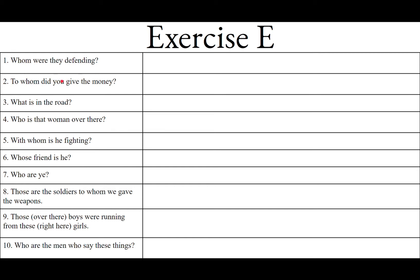It's going to be second-person singular, because you did it — perfect tense, active voice of do, dare, datus. What did you give? That's going to be the direct object. The money is what you gave, the thing that you gave — accusative case. We want the accusative singular of pecunia, first-declension feminine: pecuniam. Dedisti and pecuniam — you gave the money.